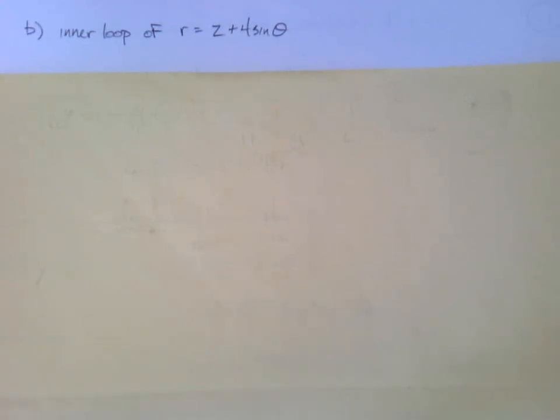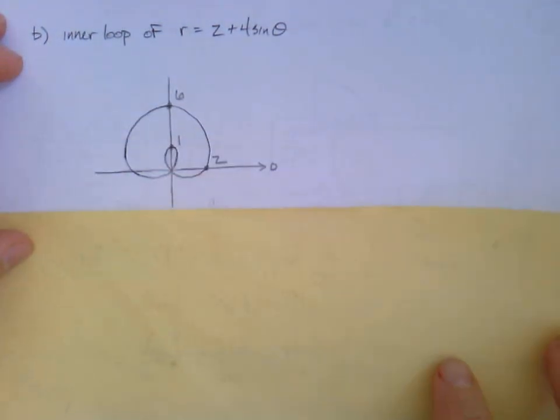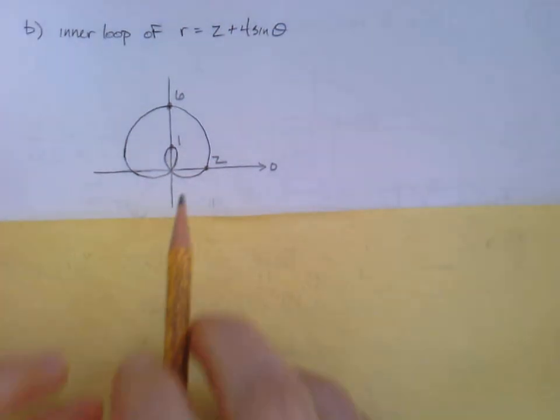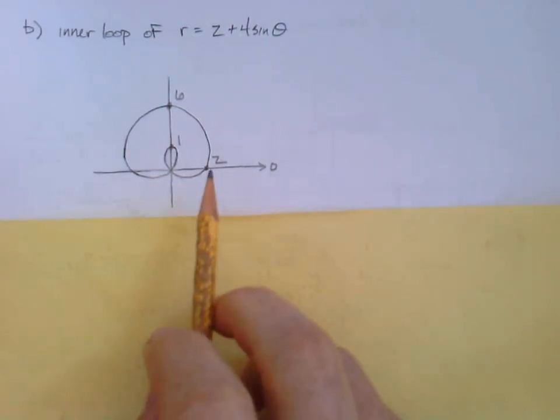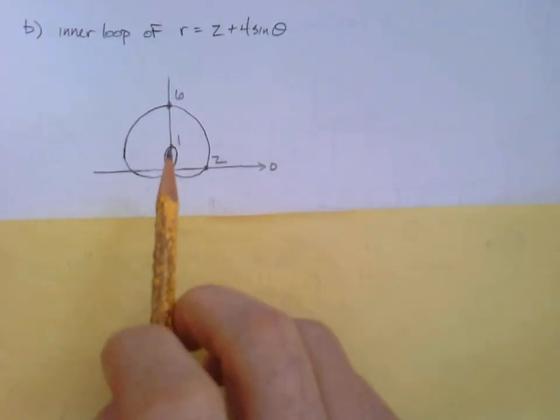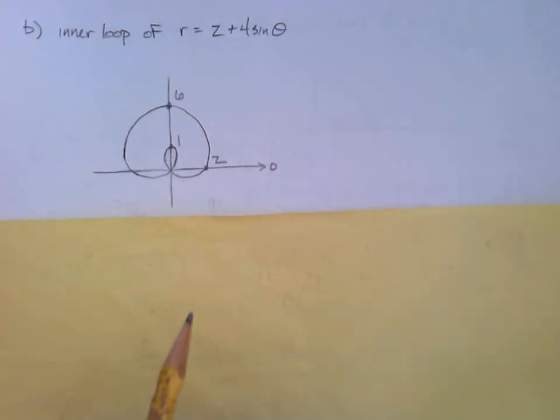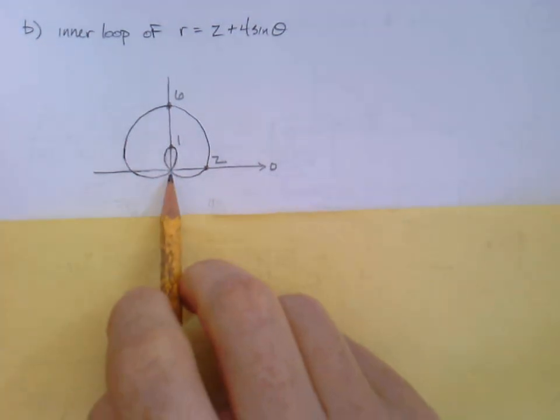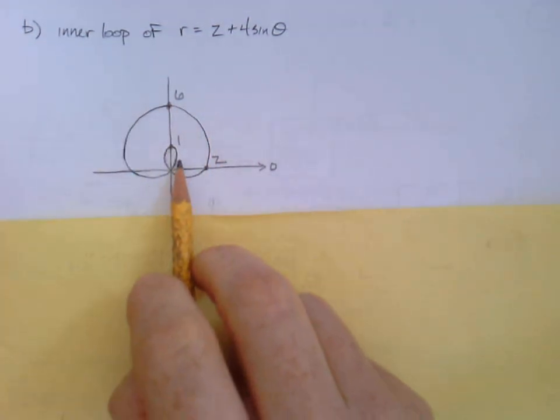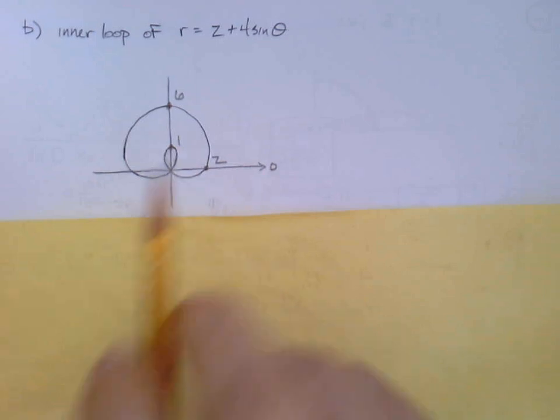Okay, the inner loop r equals 2 plus 4 sine theta. Well, the graph is this. Alright, so there's our polar axis. It's the type of limaçon. It's probably kind of what most people think of when they think of a limaçon. It comes back and it has this inner loop. It doubles back inside of itself.